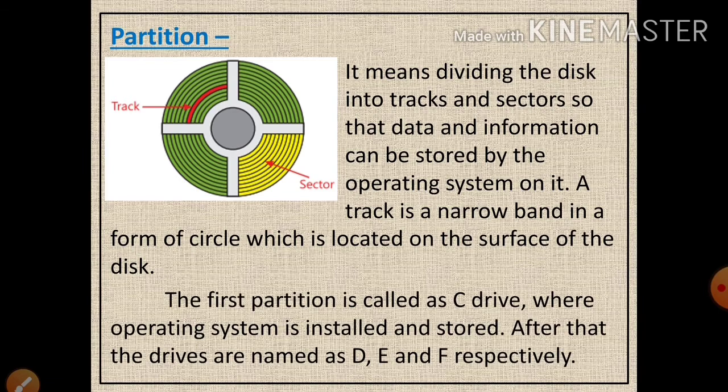This partition also allows us to install two operating systems on the computer system. The first partition is called the C drive, where the operating system is installed and stored. After that, the drives are named as D, E, and F respectively.